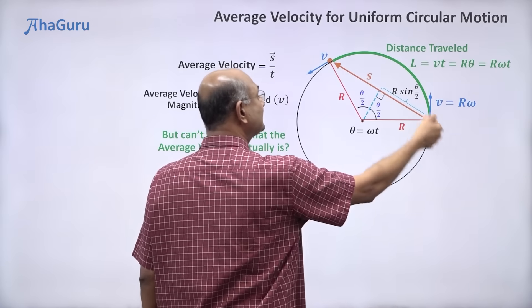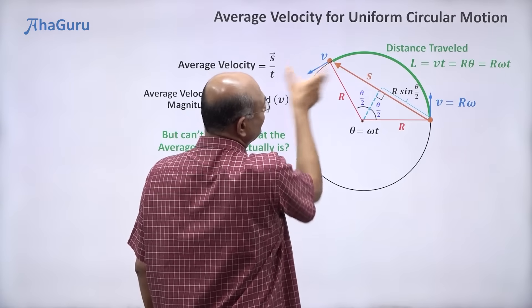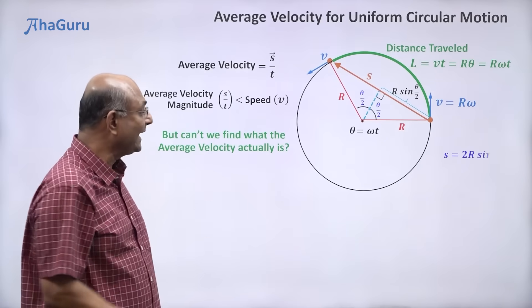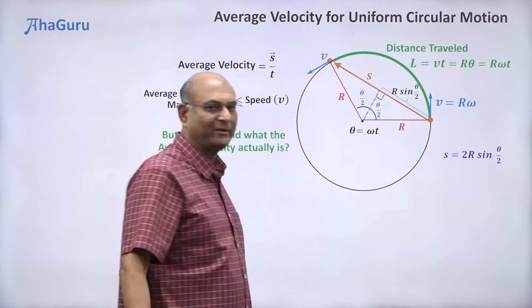What about the displacement magnitude s? Well, it will be twice of this. Because this will also be r sin theta by 2. So we can say s is 2 times r sin theta by 2. Till here, it is very simple and straightforward.